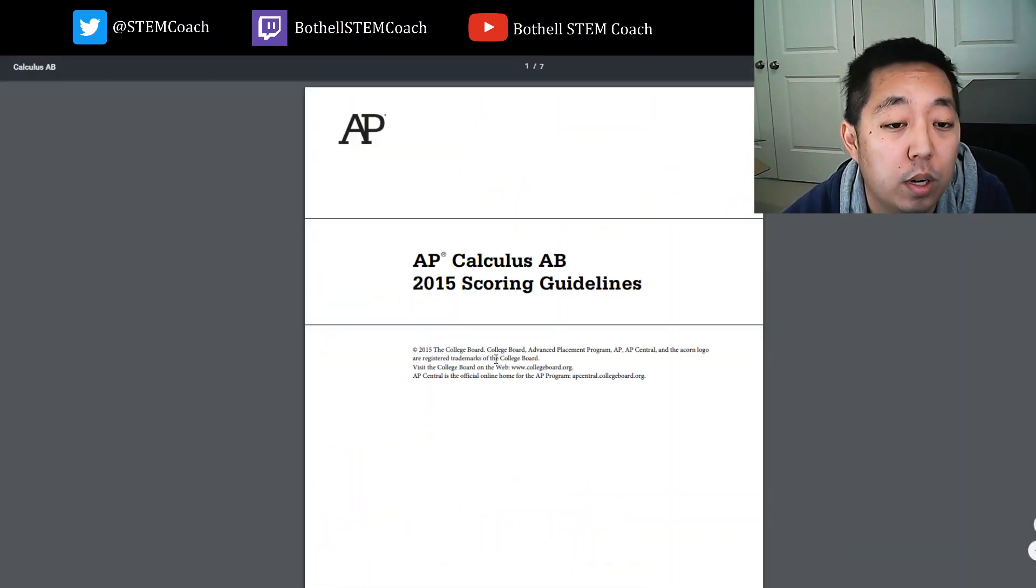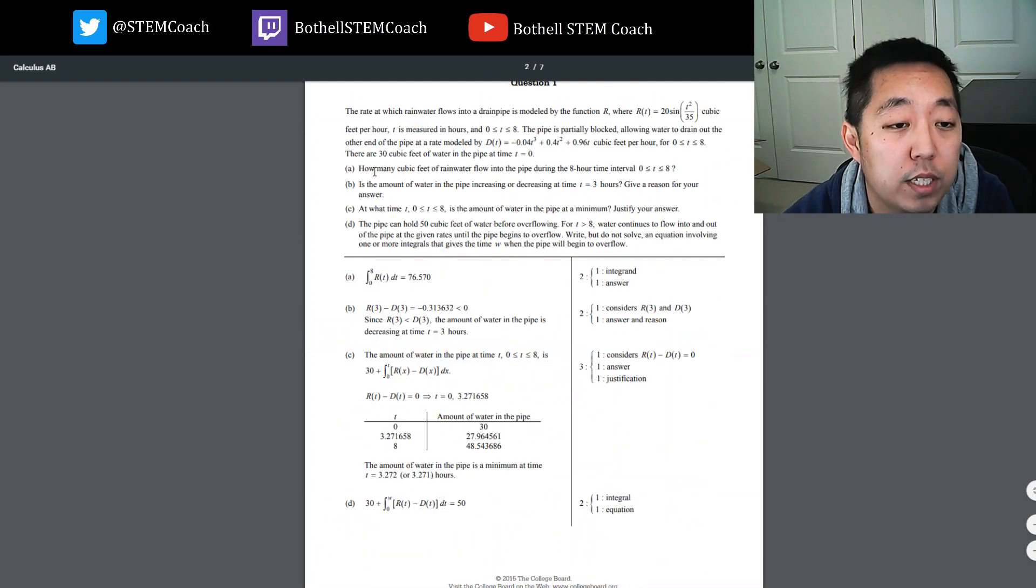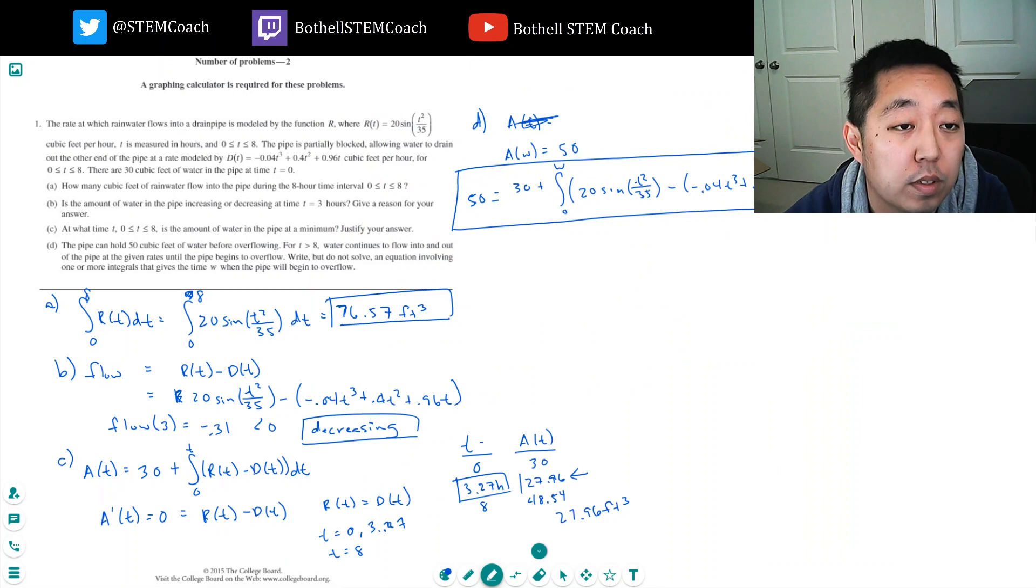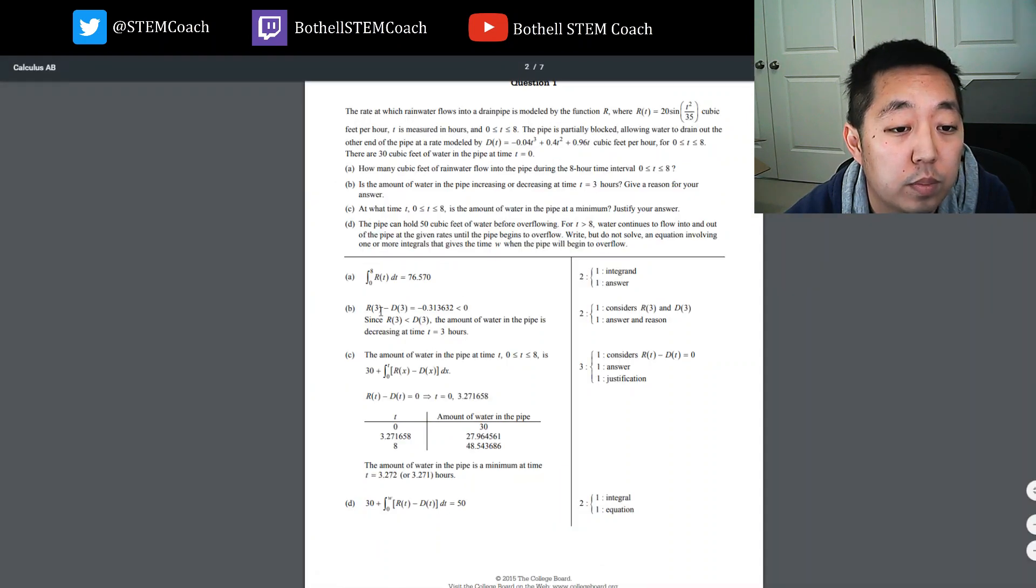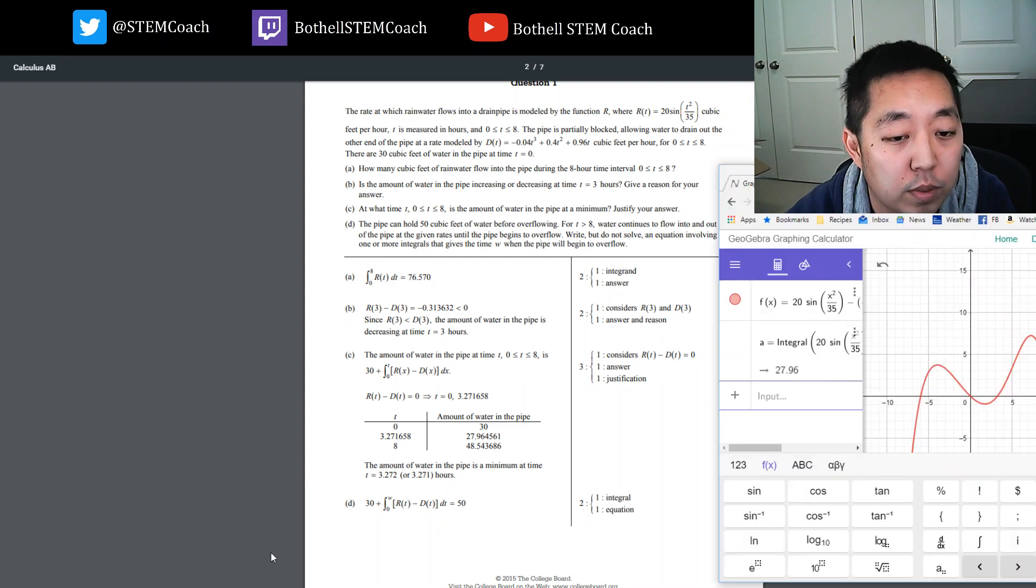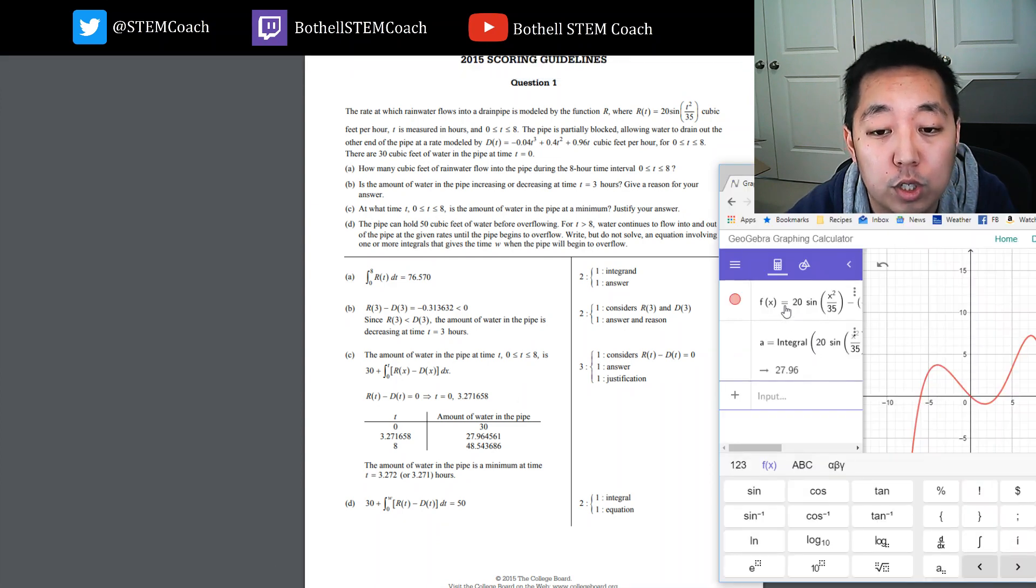Okay. So let's look at how we did. Here are the scoring guidelines. 76.57, that's right. Less than, the amount of pipe is decreasing. So we got that right. Decreasing. The amount of water in the pipe is given by this. At 3.27, I filled in this table. These numbers look correct to me. And so the minimum time is 3.272 or 271. My calculator didn't do three decimal places. I really should have. I noticed that when this thing gave me some numbers. I really should have considered.